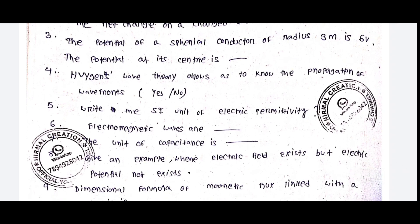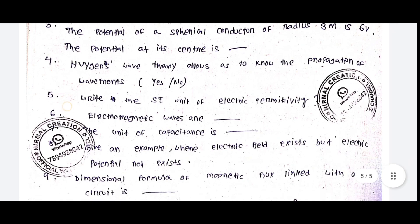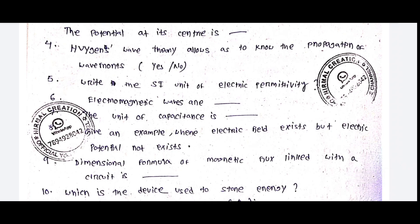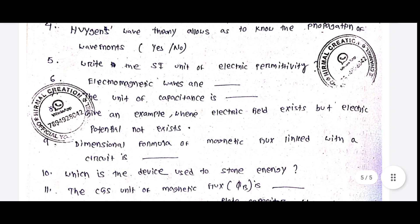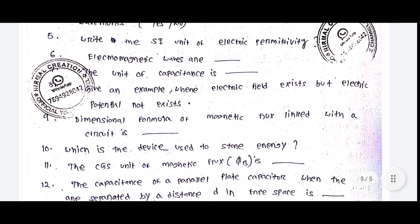Huygens' wave theory allows us to know the propagation of wave fronts — yes or no. Write the SI unit of electric permittivity. Electromagnetic waves are dash. The unit of capacitance is dash. Give an example where electric field exists but electric potential does not exist.